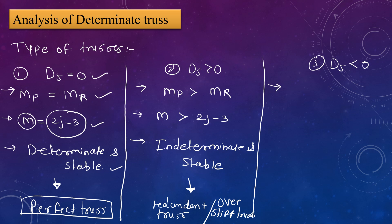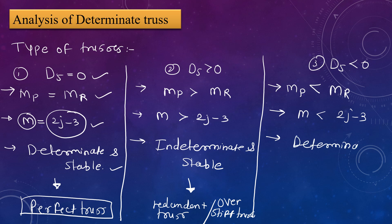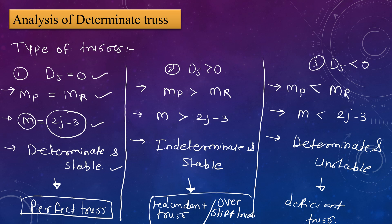The third condition: if DS is less than 0, then member provided is less than member required, and the number of members is less than 2J − 3. Then that structure is determinate and unstable. This truss is known as a deficient truss. These are the three types of trusses and the conditions to identify each type.